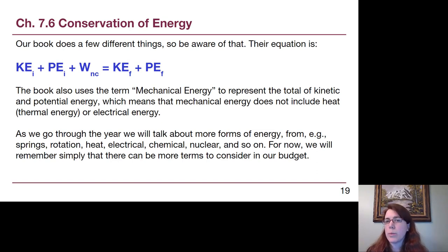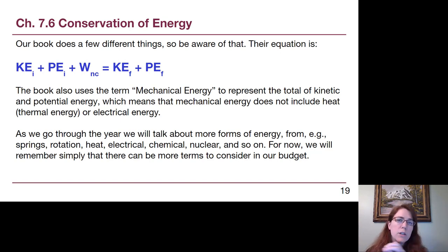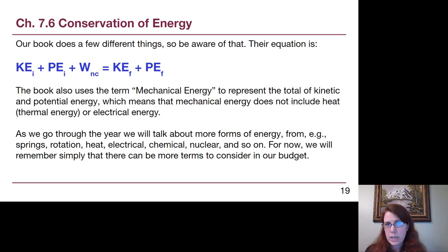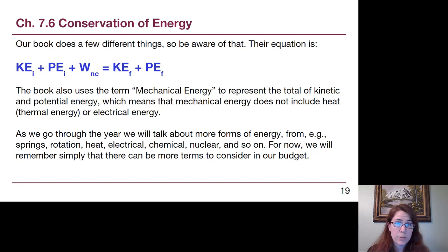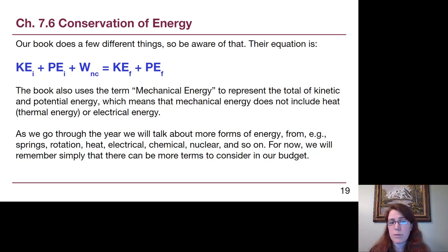The textbook makes things look more complicated — it has kinetic energy initial, potential energy initial, work of non-conservative forces, kinetic energy final, and potential energy final. It also introduces mechanical energy as all kinetic and potential energies together, as opposed to heat or electrical energy. For Physics 125, we don't have to worry about that distinction — we're only going to talk about kinetic energy terms and potential energy terms.